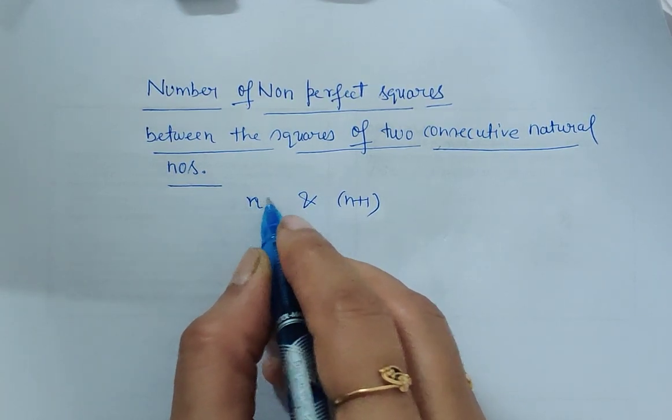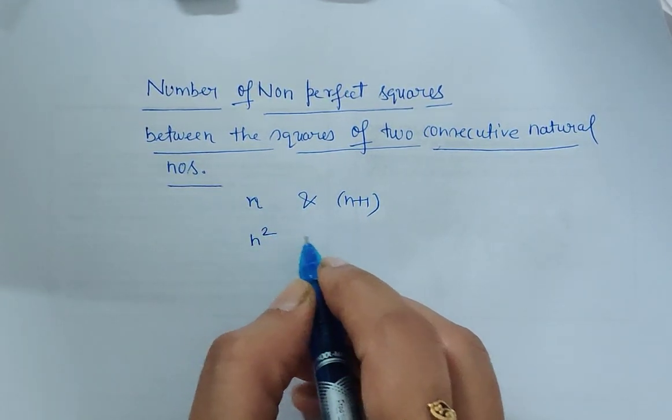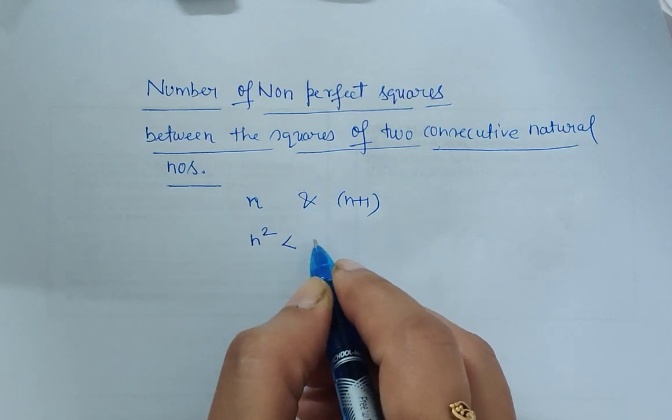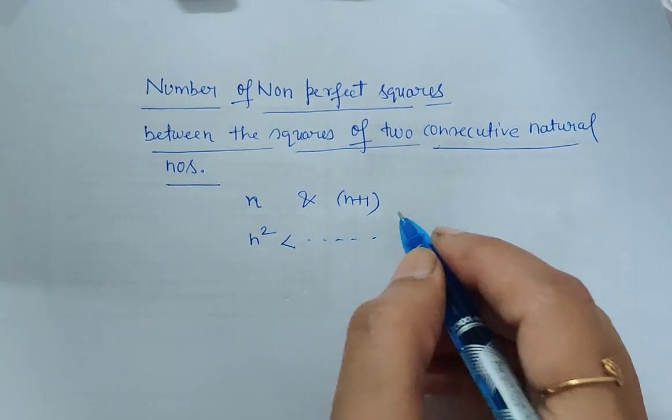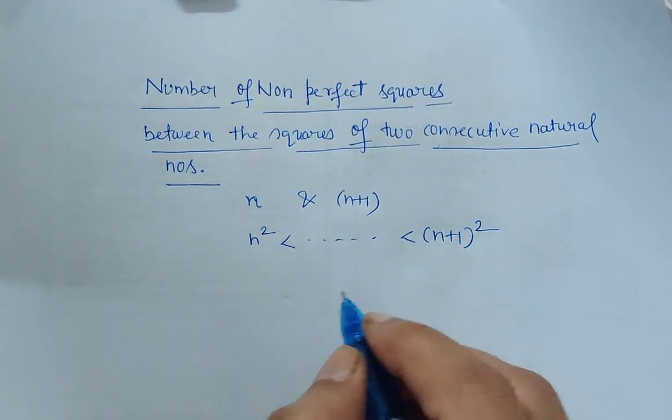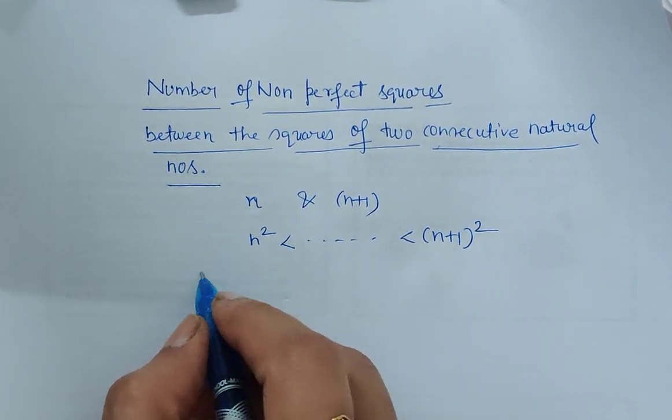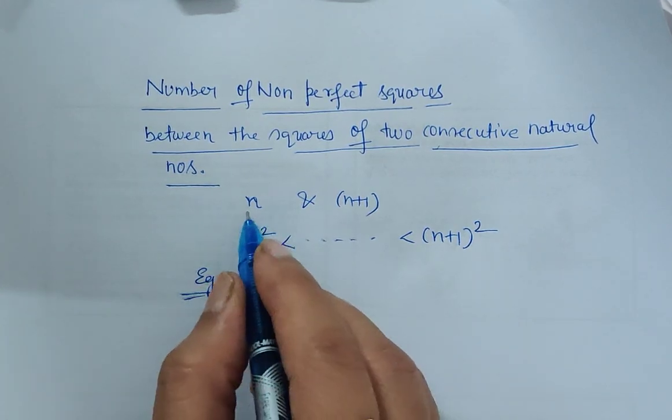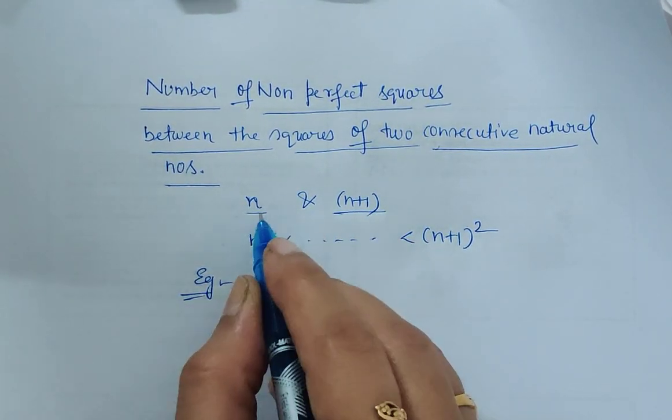Between n² and (n+1)², we have to calculate what numbers lie between n² and (n+1)². For example, if the consecutive natural numbers are n and this number is one more than this number, we can take any example.